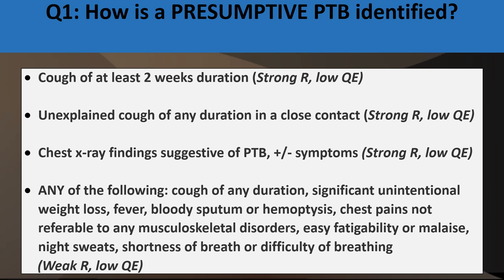How is a presumptive TB patient identified? It presents with at least two weeks' duration of cough, or cough unexplained of any duration in a close contact, or chest X-ray findings suggestive of PTB. Any of the following: cough of any duration, significant unintentional weight loss, fever, hemoptysis, chest pains not relatable to costochondritis, easy fatigability, night sweats, shortness of breath, or difficulty of breathing.